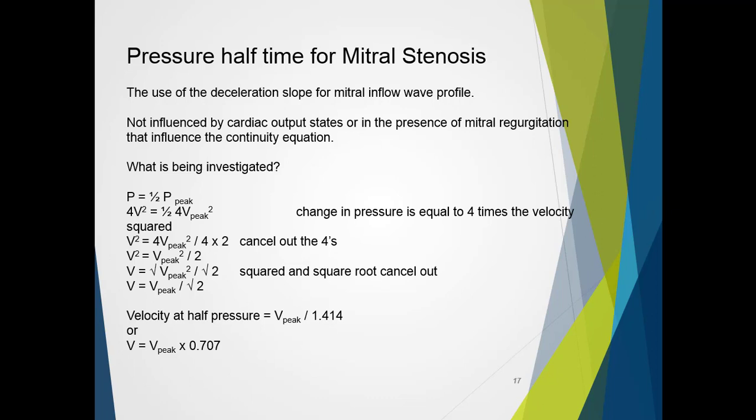So what is actually being investigated? The time taken for the pressure to halve from its original state. With the systems that we measure, velocity, not pressure, so the principle as follows. So pressure is equal to half the peak, therefore 4V squared is half 4V squared at the peak. And what we do is we remove the squared, and we rearrange the formula across, and we cancel out the 4s. But this can start to get a little bit hectic, so what we'll actually just break it down to is the velocity at half pressure is the Vpeak divided by 1.414, or conversely, you can say the velocity at peak times 0.707.